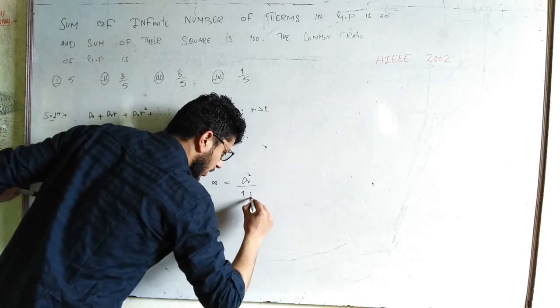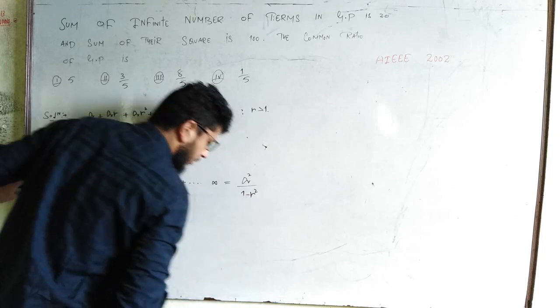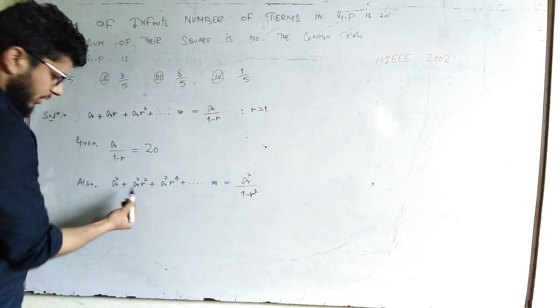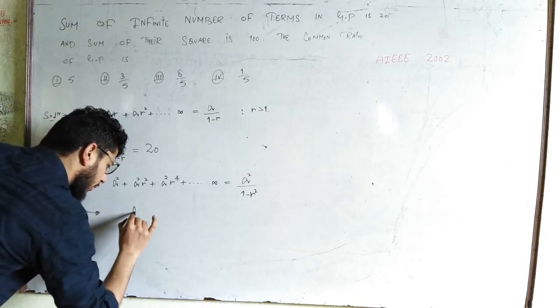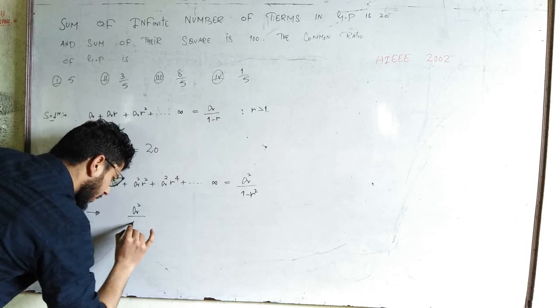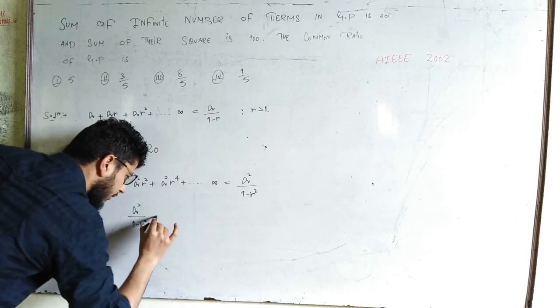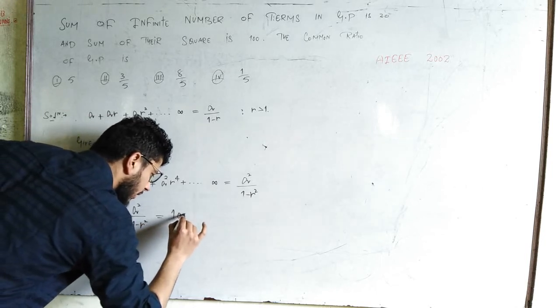The common ratio becomes r². By the question, a²/(1-r²) = 100.